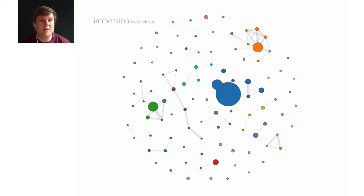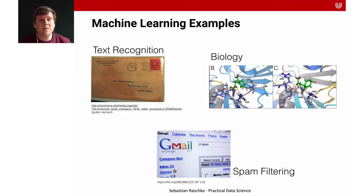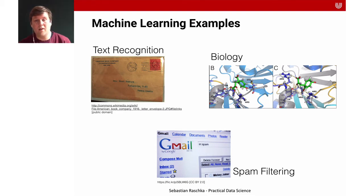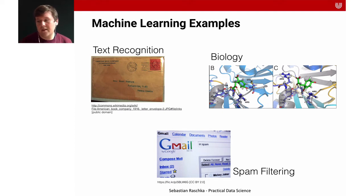Let's consider some more examples of machine learning. One of the classical examples is spam filtering — you have an email and decide whether it's appropriate or spam. It's quite impressive that this can be done with current technical means, even though we're far from full text understanding. Machine learning is also applied in biology, to recognize handwritten numbers, and to recognize text and images.